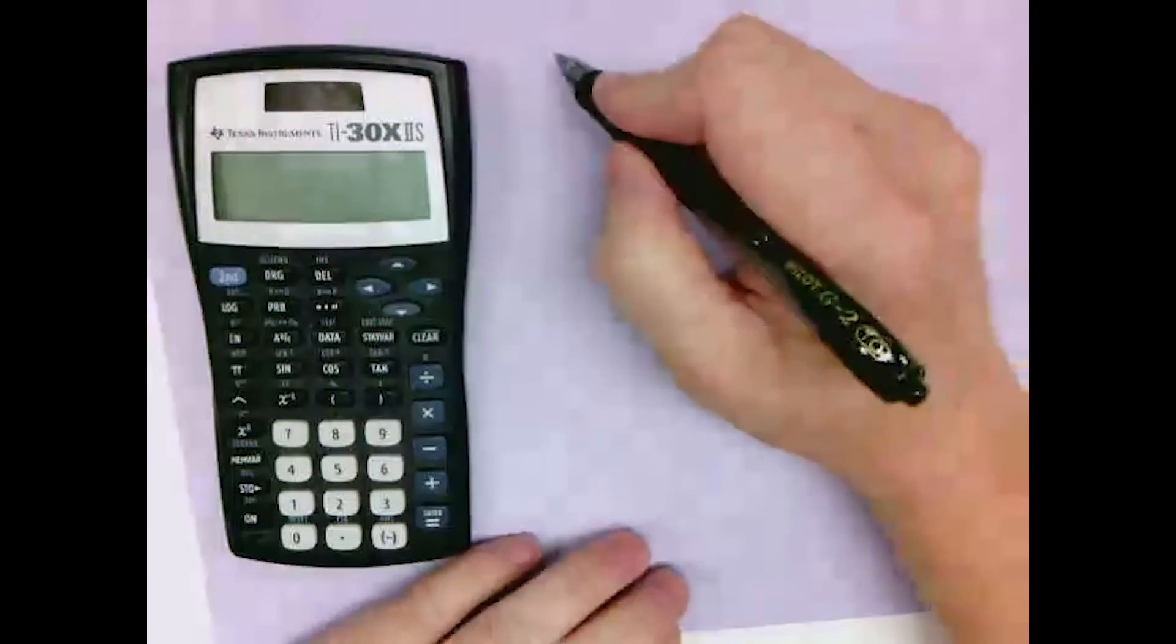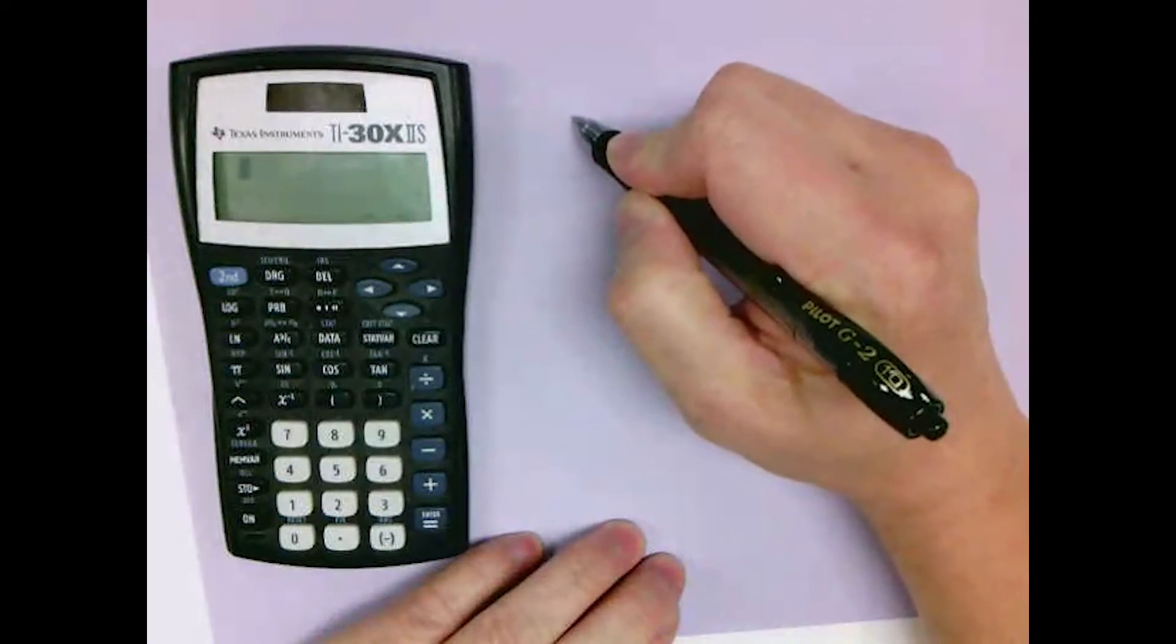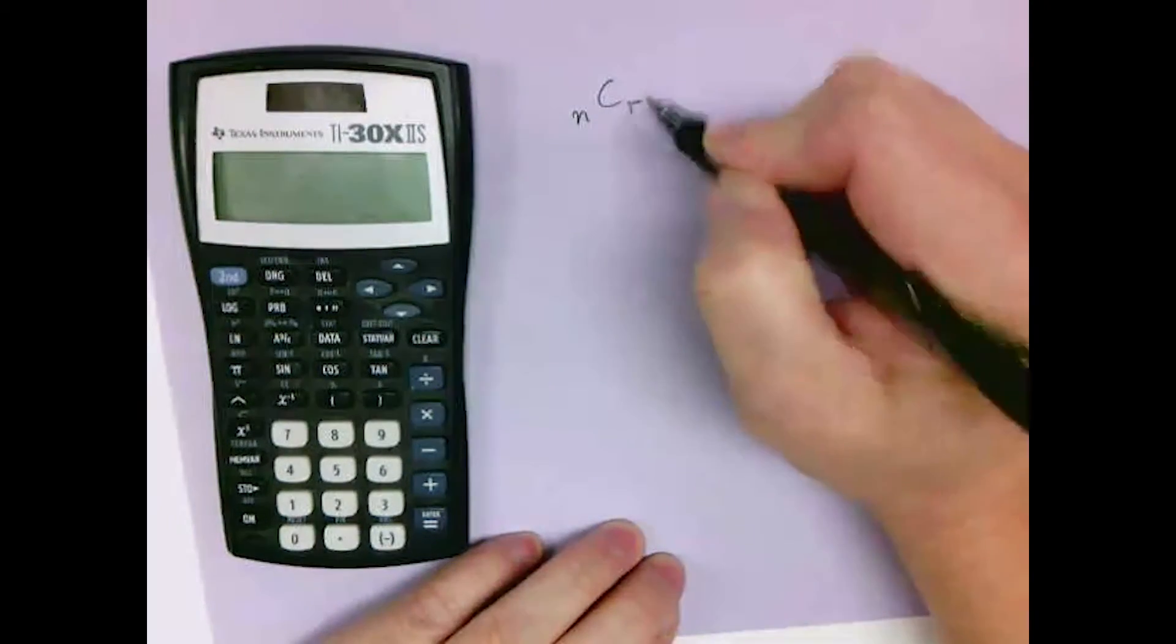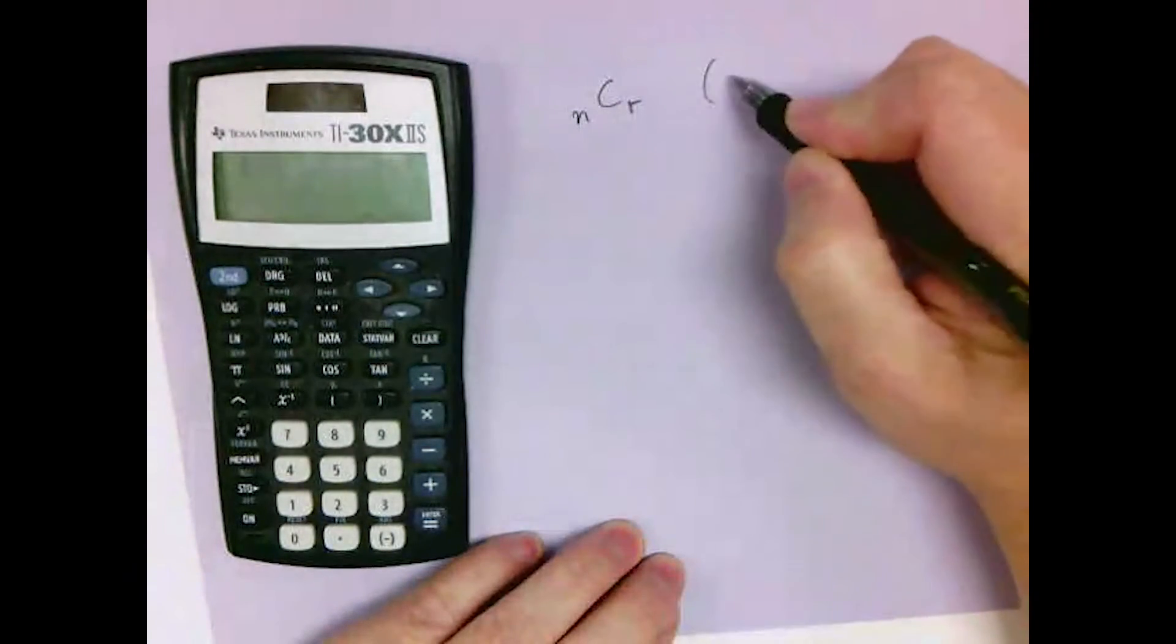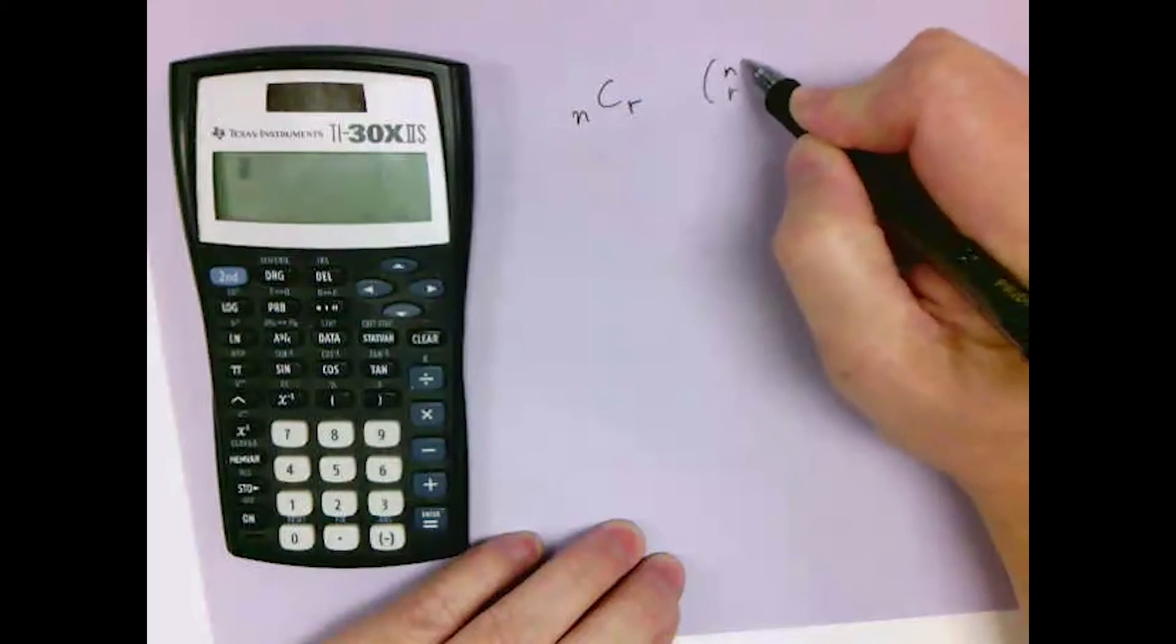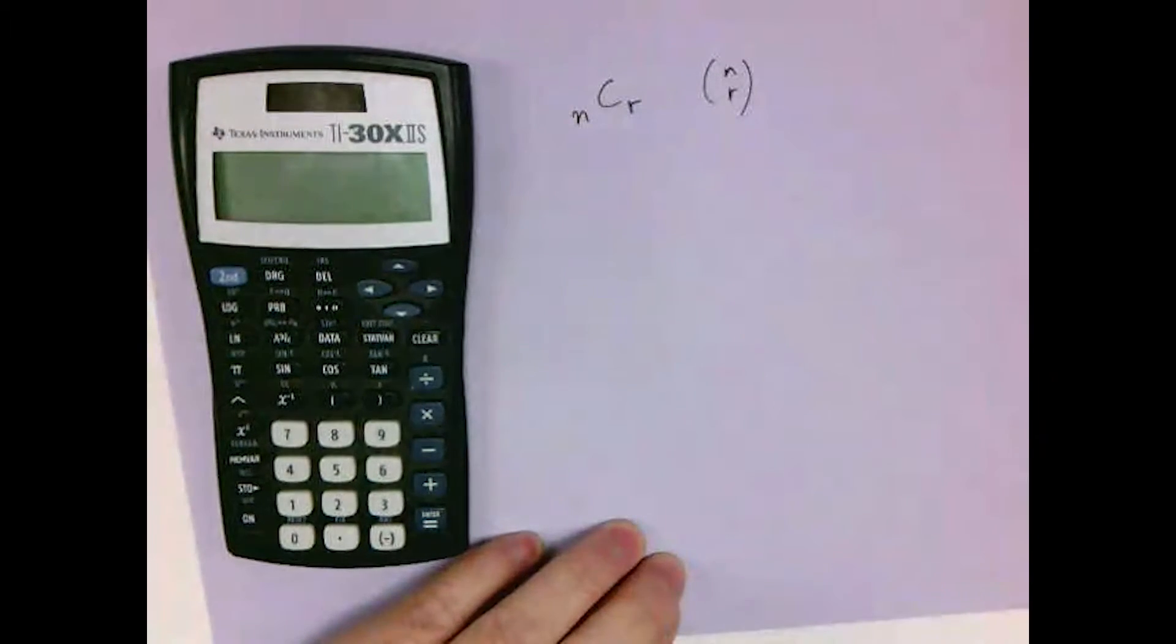The binomial coefficient can be written as N choose R with the letter C, or as N choose R in parentheses vertically. Most calculators use the NCR notation.